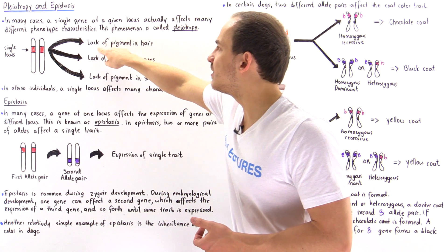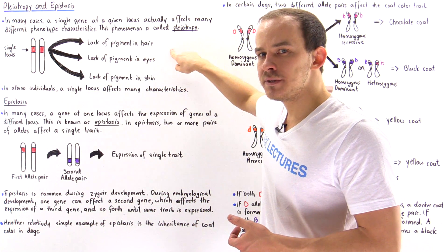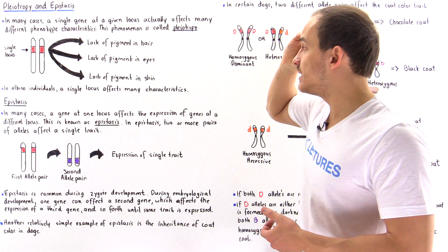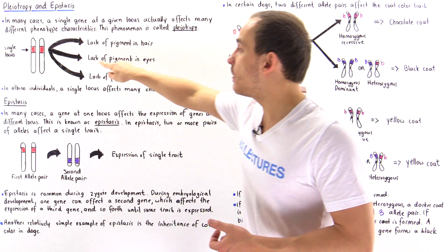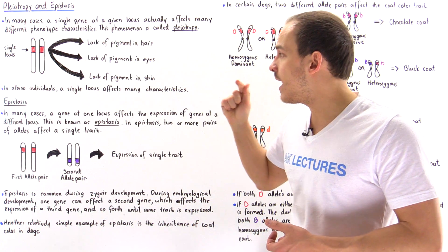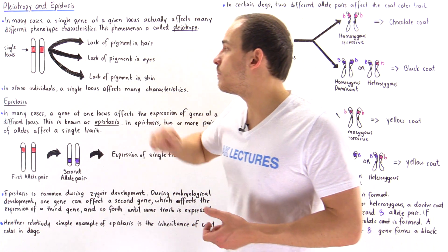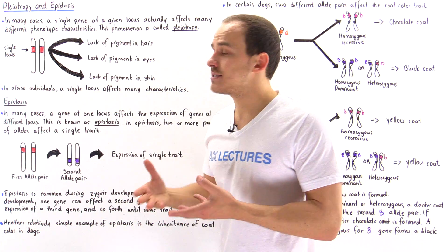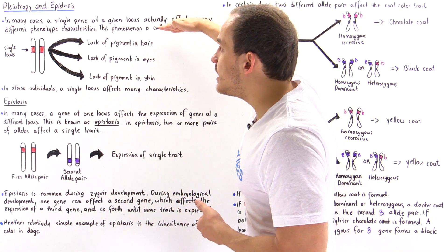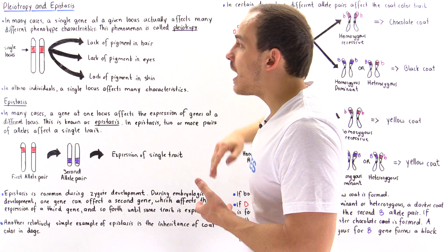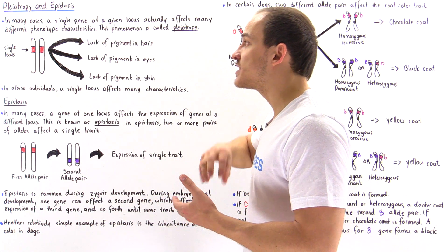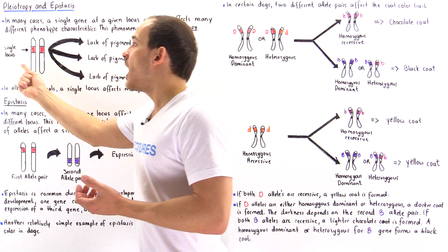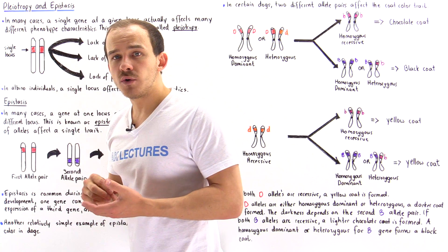Those three traits are: number one, lack of pigment in the hair; number two, lack of pigment in the eyes; and number three, lack of pigment in the skin. These three different types of phenotype traits are all expressed as a result of a single locus.